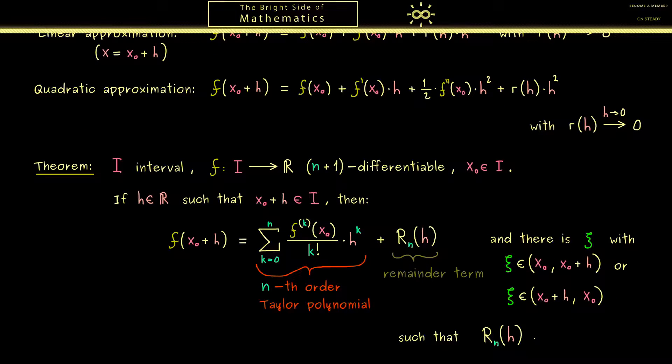So we don't know the exact value of the number xi here but we know the range of it. However often this is enough for an estimate of the remainder term Rn. And in fact the formula for the remainder term is so easy to remember because it looks exactly like the last term in the Taylor polynomial. More concretely the number of the derivative is n plus 1 and we divide by n plus 1 factorial. In addition at the end we have h to the power n plus 1.